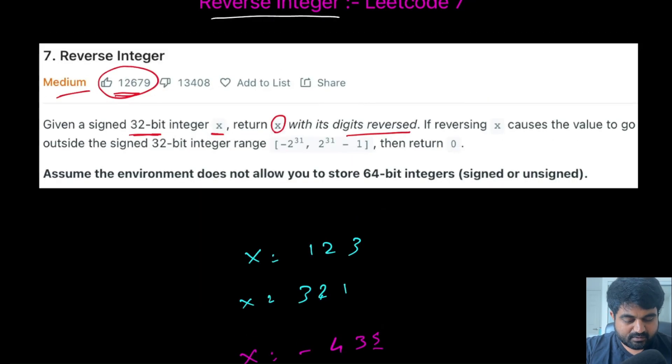We are also given some condition where the given number should not exceed the maximum range of a 32-bit integer. If that is the case, then we need to return 0.